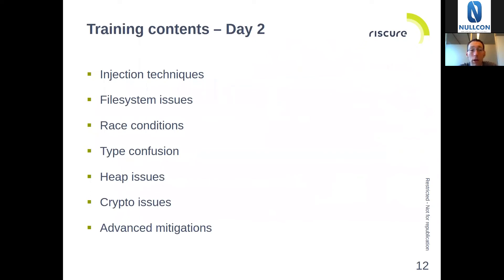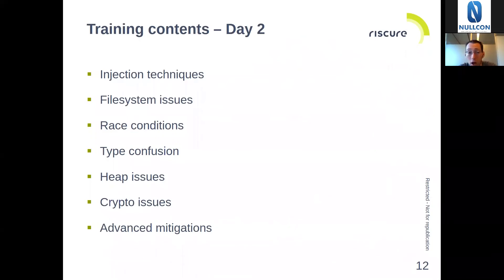On the second day, we go through a whole list of different topics — what can go wrong if you use the file system of your device to store information and how an attacker can leverage that, but also what can go wrong with dynamic memory if used incorrectly, what can go wrong with cryptography, type confusion vulnerabilities, race conditions, shell injection, and even SQL injection. And what is very interesting is that at the end of the second day, we finish with what are really the state-of-the-art expert mitigations that bring the complexity of performing attacks to a new level. In that topic, we are going to discuss things like control flow integrity and shadow stacks, and what you see now is that very slowly, they start to penetrate the market.